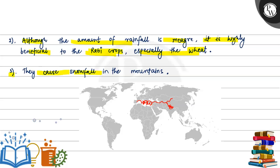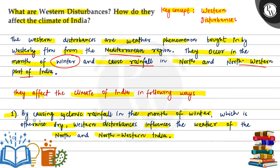The third point: they cause snowfall in the mountains. When the winds flow into the Himalayan mountains, they cause snowfall there. So this is all about western disturbances. I hope you understood it well. Best of luck.